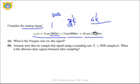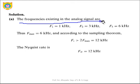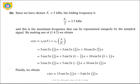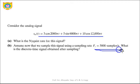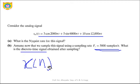Since 6k is the maximum frequency component, the Nyquist rate is 6k × 2 = 12 kilohertz. Now for the second part: the signal is sampled using a sampling rate FS = 5000 samples per second. We need to find the discrete-time signal X(N) obtained after sampling based on this FS.